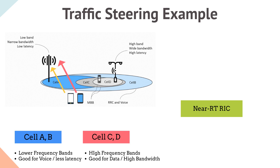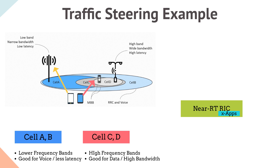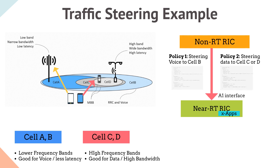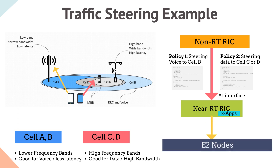To overcome this, O-RAN Alliance identified traffic steering as a use case to be addressed by X-Apps. The idea is to deploy X-Apps that support custom UE-centric traffic steering strategies for various mobile traffic scenarios — such as user assignment to base stations considering traffic types, voice or mobile broadband, cell types, radio technology type, slice type, and others. This helps connect voice users to lower frequency cells and high data users to small cells with high frequency, steering traffic efficiently. Non-RT-RIC passes A1 policies to the Near-RT-RIC, where X-Apps receive these policies and steer traffic by controlling the E2 nodes.